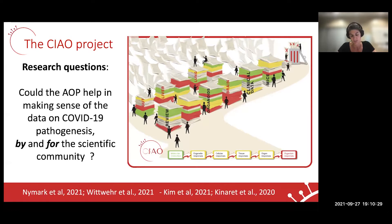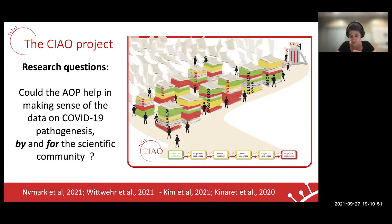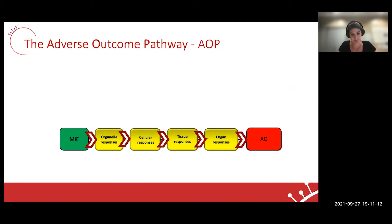Could the AOP framework, well established in toxicology for regulatory purposes and assessing chemical risk, be used to organize the knowledge on COVID-19 pathogenesis to model a viral disease by and for the scientific community? This research question was developed in a published paper, and other scientists asked the same question — such as Kim, who published on how the adverse outcome pathway could potentially bridge the pathogenesis of COVID-19, and the lab of Dario Greco on what nanotoxicology can teach us on COVID-19 via the AOP. Both of those scientists are part of the CHAO crowd as well.